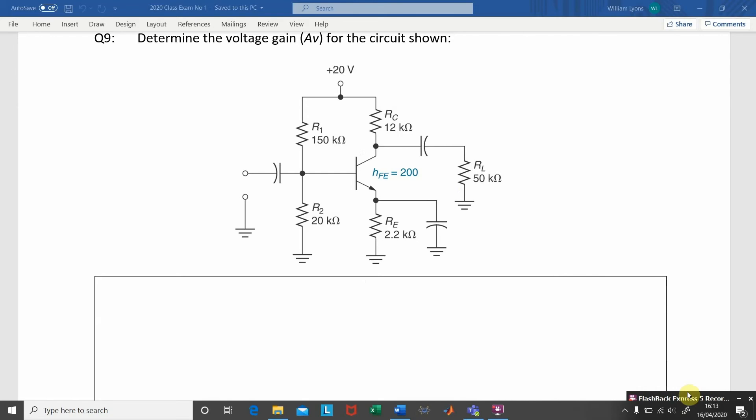In this question, we are given a voltage divider bias amplifier, and we are asked to find the voltage gain, AV, of the circuit shown.